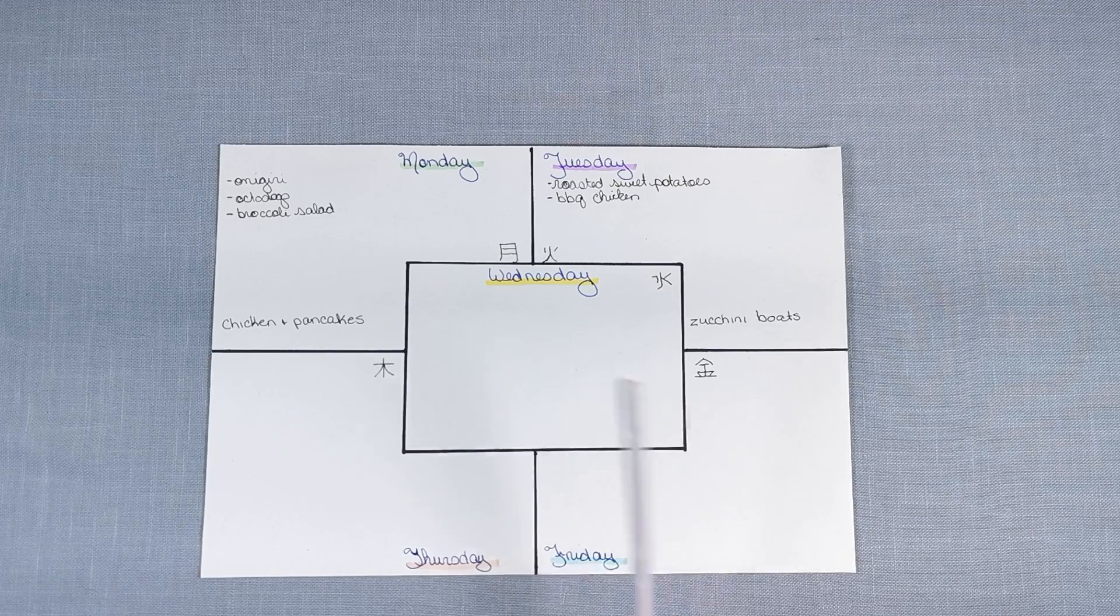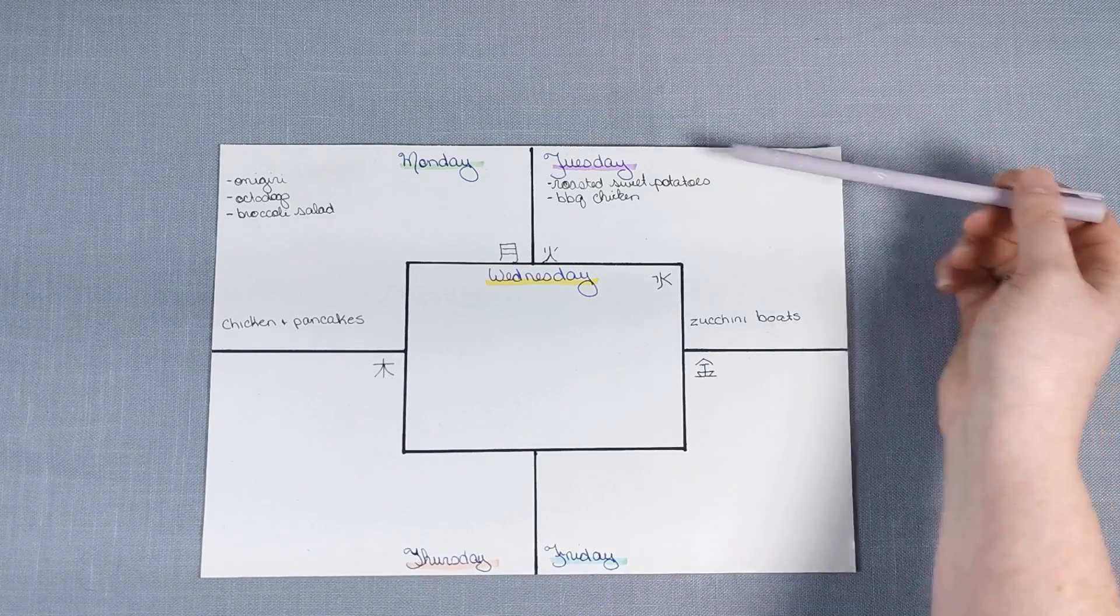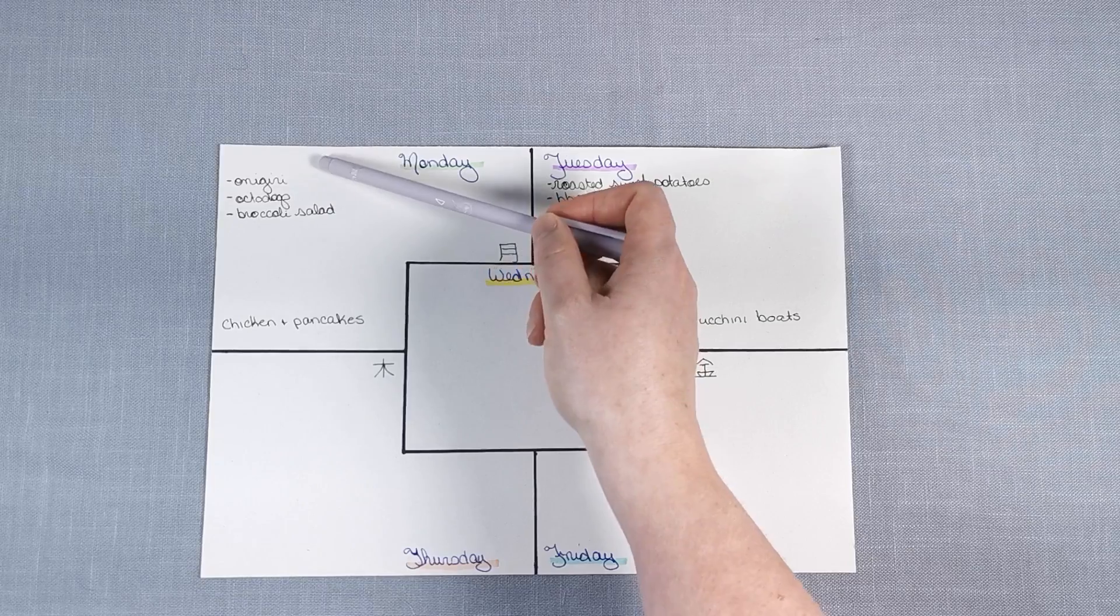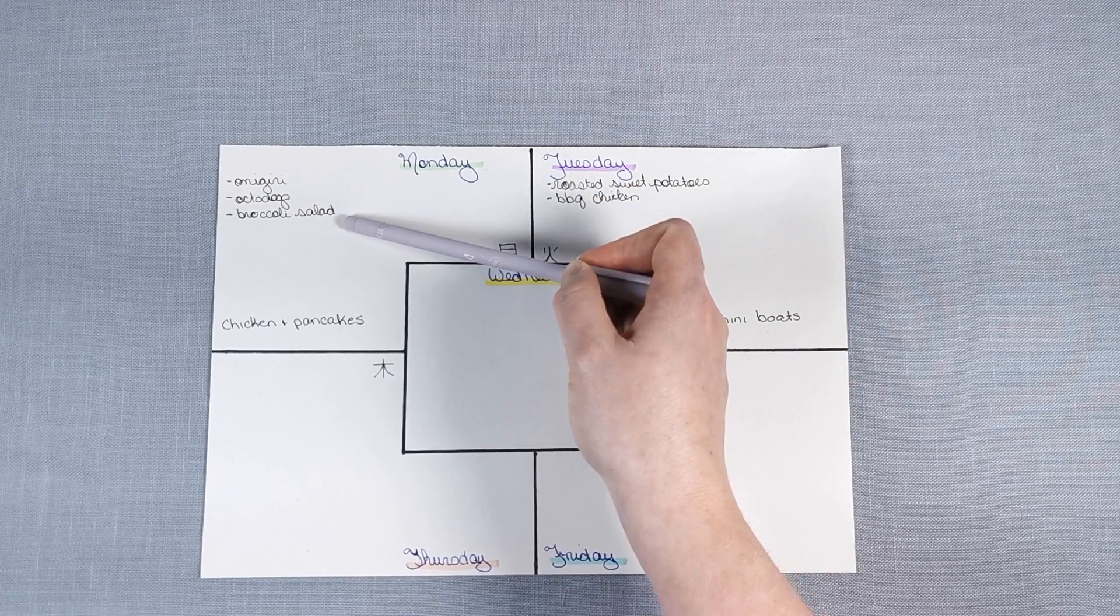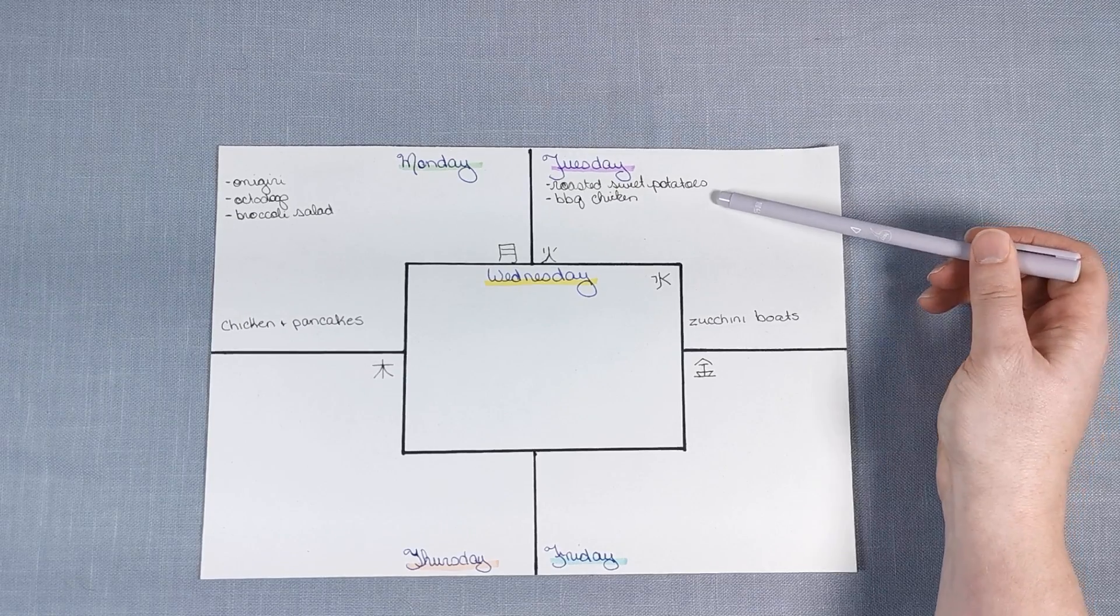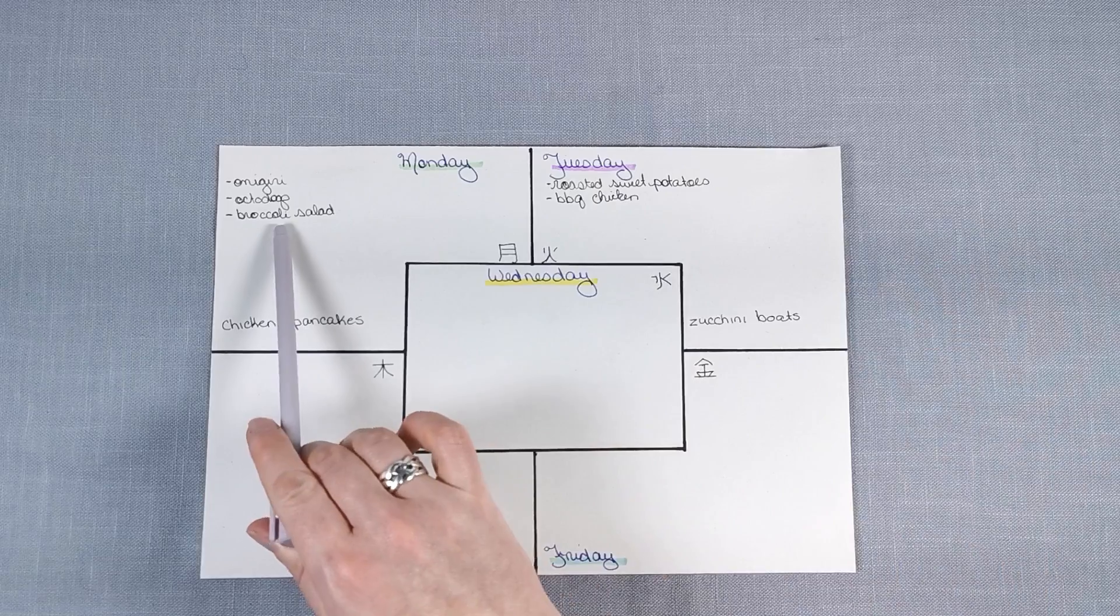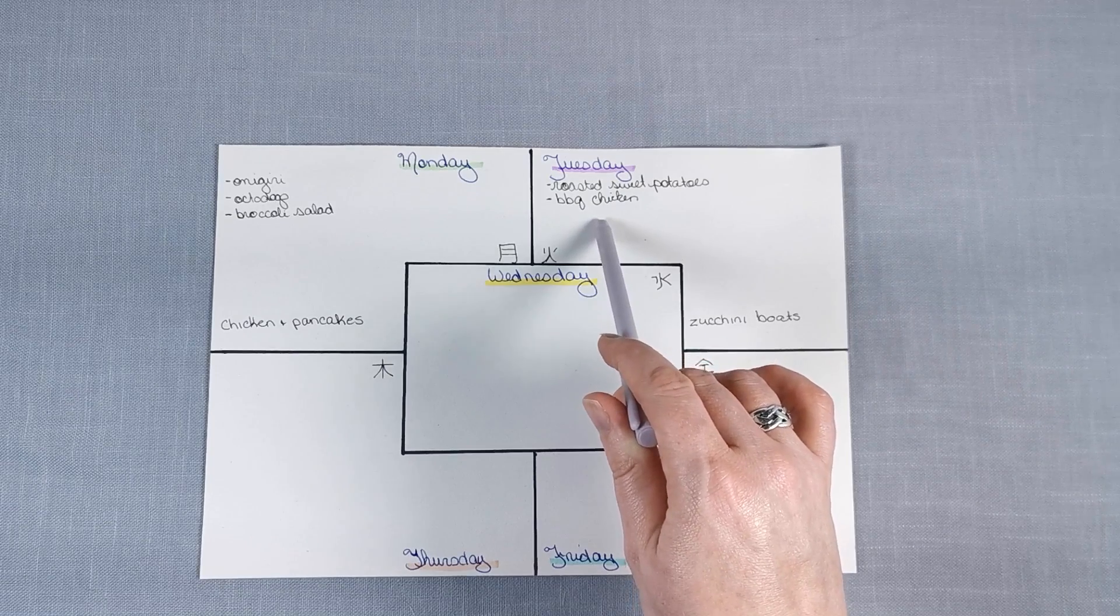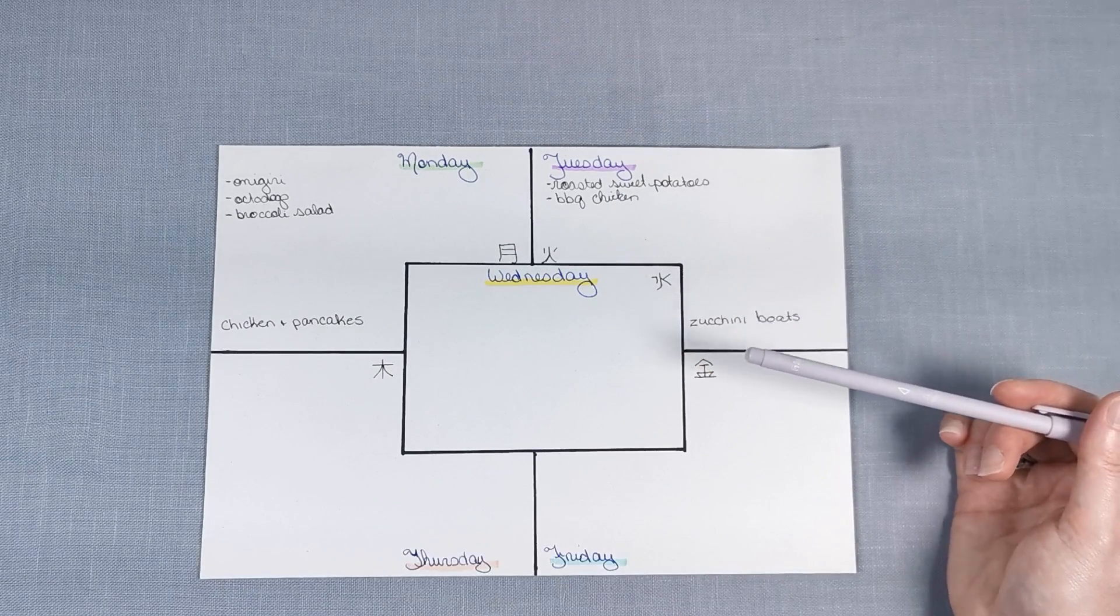But you can see how we have the basic shape of my bento. So carb, protein, vegetable. Here, I've got only carb and protein because I have leftover vegetable from the day before. Or usually by the end of the week, I have a stockpile of vegetable dishes that weren't quite finished.